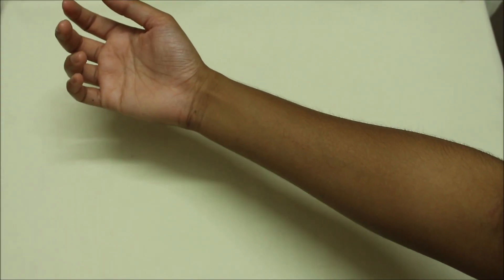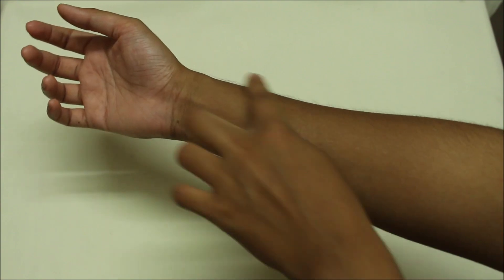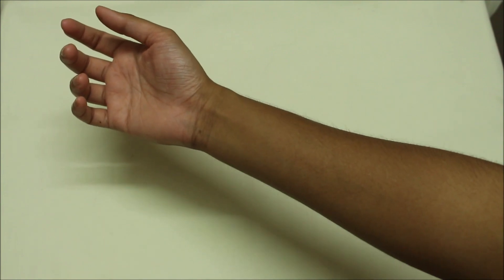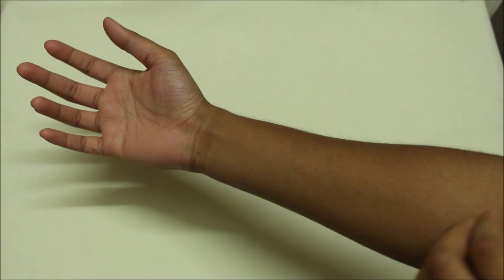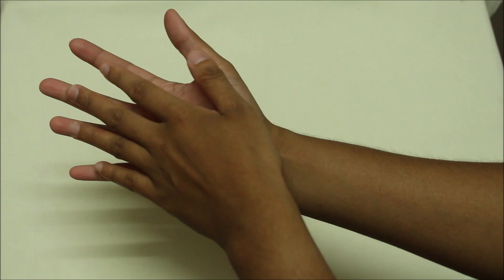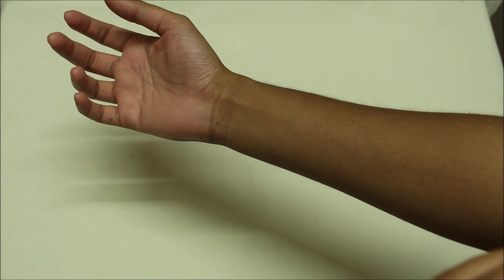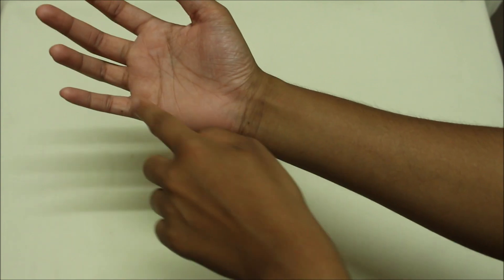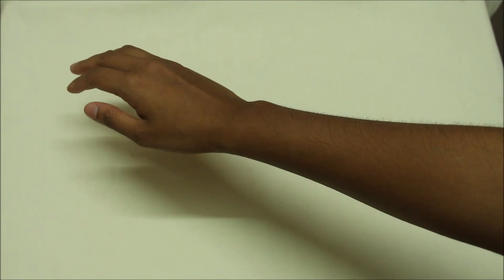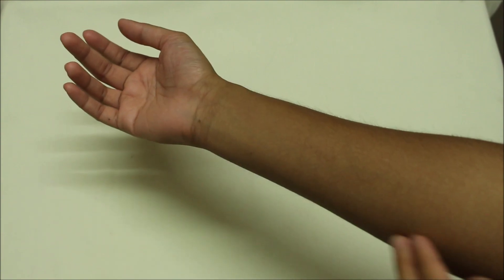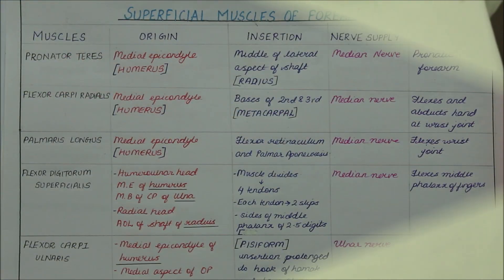An easy way to remember these muscles is by their logical arrangement. The radius bone lies on one side and the ulna bone on the other. So firstly we have the flexor carpi radialis towards the radial side, then the flexor carpi ulnaris towards the ulnar side. We have the flexor digitorum superficialis for the digits. Then we have the palmaris longus — a long muscle relating to the palm. And the pronator teres, which helps in pronation.